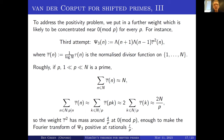So we have a function supported on the shifted primes which, assuming all sorts of high-powered Hardy-Littlewood correlation conjectures, we can convince ourselves we expect to have real and basically positive Fourier transform, at least at rationals with small denominator.